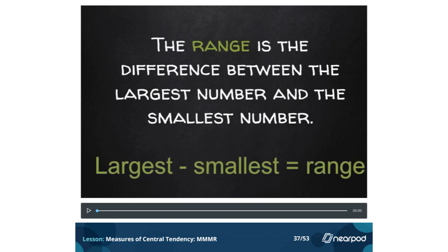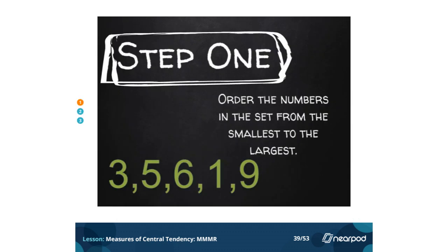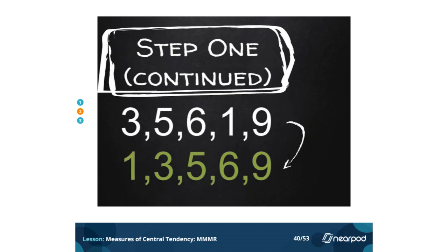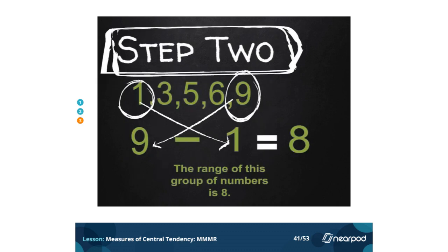Let's talk about the range. The range is the difference between the largest number and the smallest number — largest minus smallest equals range. Step 1: order the numbers in the set from smallest to largest. We have 3, 5, 6, 1, 9 — sequenced from smallest to largest: 1, 3, 5, 6, 9. Step 2: the range is the highest minus the lowest. 9 minus 1 equals 8. The range of this group of numbers is 8.